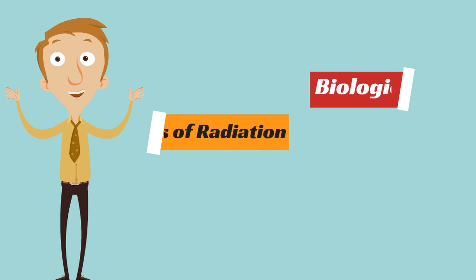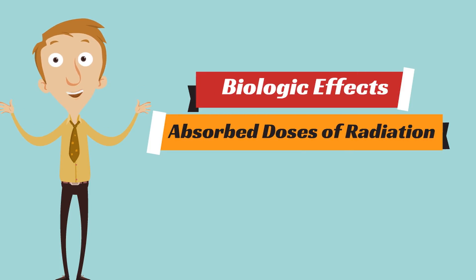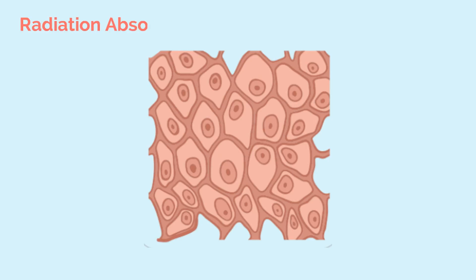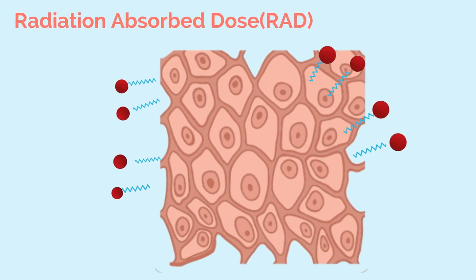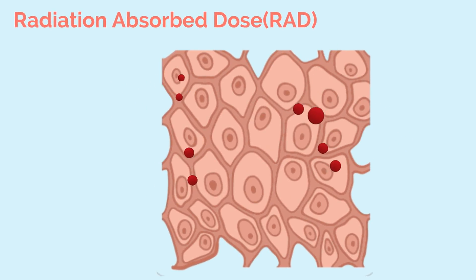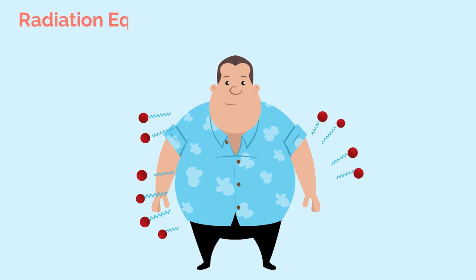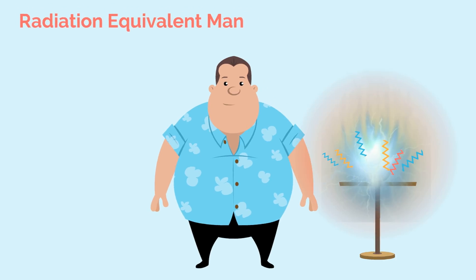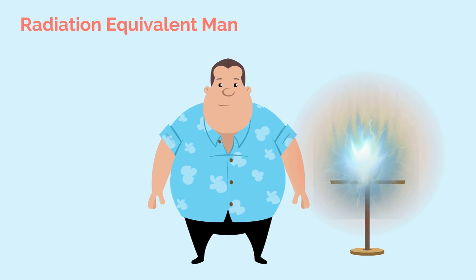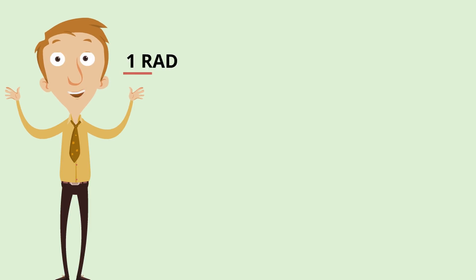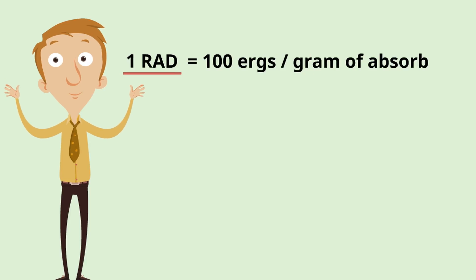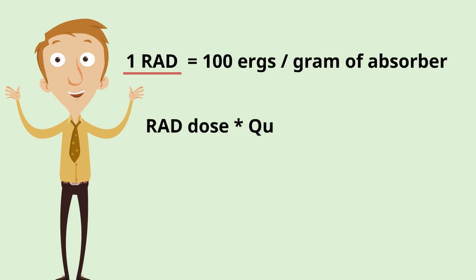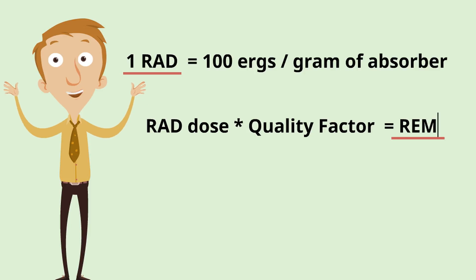This is important to discuss, as biologic effects are related to absorbed doses of radiation. Radiation-absorbed dose, RAD, measures the deposition of radiation in any type of tissue, while radiation-equivalent man measures human exposure, further taking into account the biological effectiveness of different radiation types. One RAD equals 100 ergs per gram of absorber. Multiplying RAD dose by quality factor results in REM.